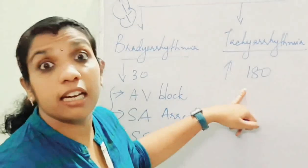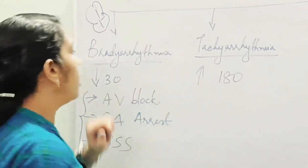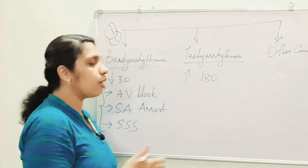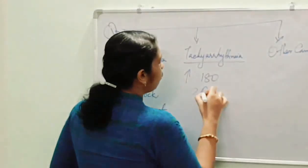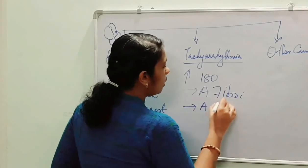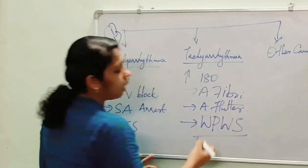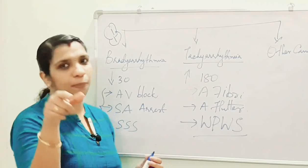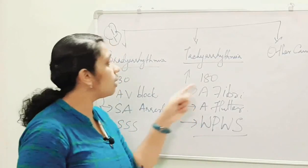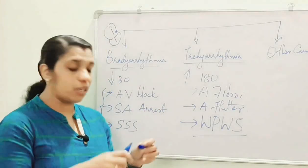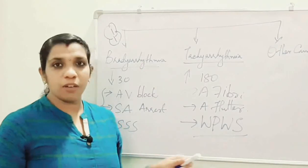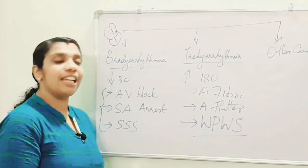Second is tachyarrhythmia, when the heart rate is greater than 190. The most important conditions are atrial fibrillation, atrial flutter, and Wolff-Parkinson-White syndrome, where there is re-entry of the impulse. These conditions lead to change in rhythm, increased heart rate, defect in stroke volume, reduced cerebral perfusion, and syncope.